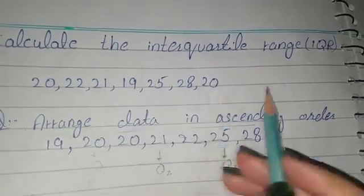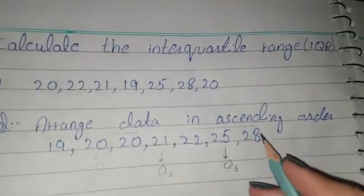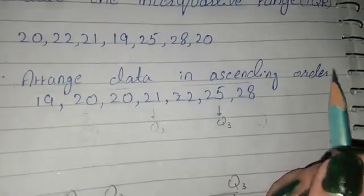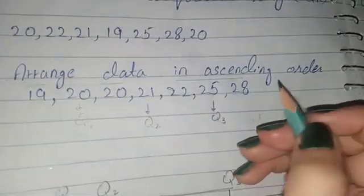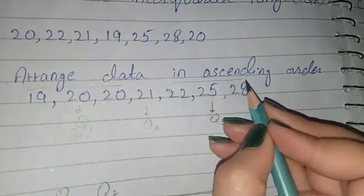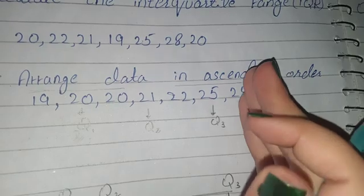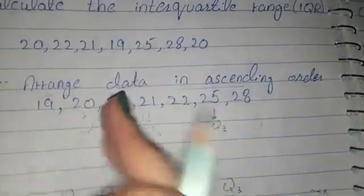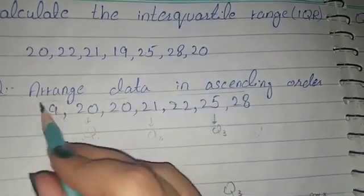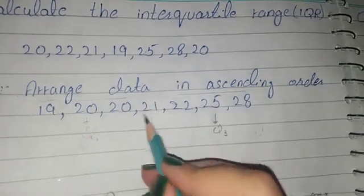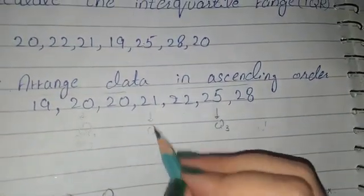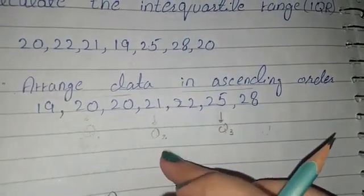These are seven values. To find the interquartile range, we count from the right side: one, two, three, and from the left side: one, two, three. We draw a line, and the remaining middle number is 21. So 21 is Q2.